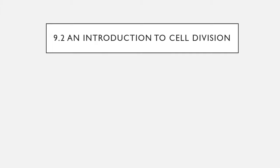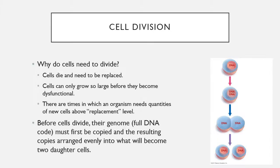In section 9.2, we'll cover an introduction to cell division. Cell division is an extremely important process in your body. One reason cells need to divide is that your cells are constantly dying and need to be replaced. When a cell divides, it goes from one cell to two cells, replacing the one that died. Cells can also only grow so large before they become dysfunctional — instead of just growing bigger, they need to divide in order for the body to grow.